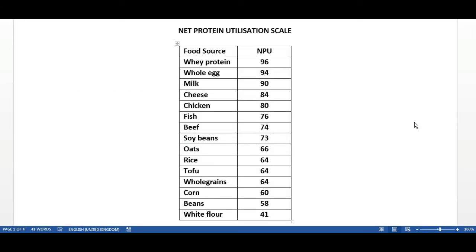So I scoured the internet and collated this list taken from various sources and if you look at this scale, it makes some interesting reading. To start off with, what this scale shows you is the amount of protein that is absorbed and specifically looking at the essential amino acids.